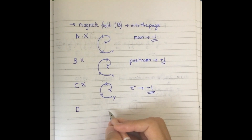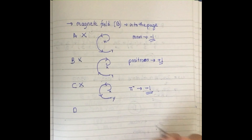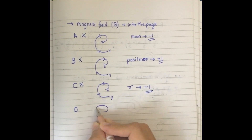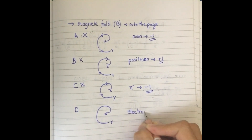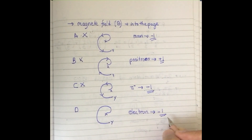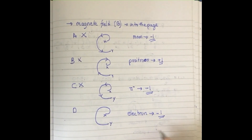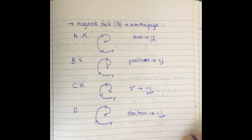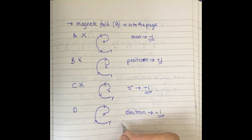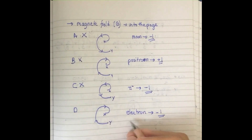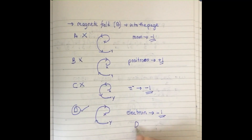Option D: an electron traveling from y to x. An electron has a negative charge (−1). It is going from y to x, and from y to x the radius is decreasing, which means energy is also decreasing. This is exactly what we expect for a negative charge moving in this direction. Therefore, option D is the correct answer.